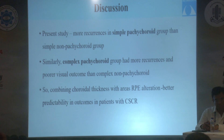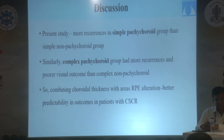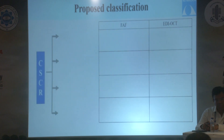Our group has already shown distinct differences in outcome with or without pachycoroid. In the present study, more recurrences were seen with the simple pachycoroid group than with simple non-pachycoroid. Similarly, the complex pachycoroid group had more recurrences and poorer outcomes than complex non-pachycoroid. Combining choroidal thickness with areas of RPE alteration gives better predictability of outcomes in patients with CSCR.